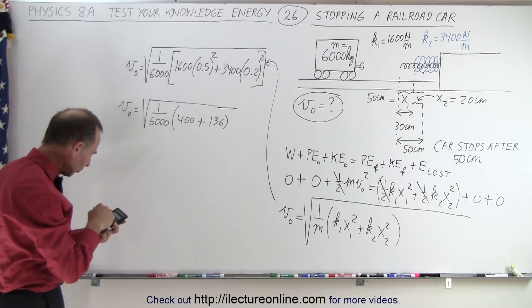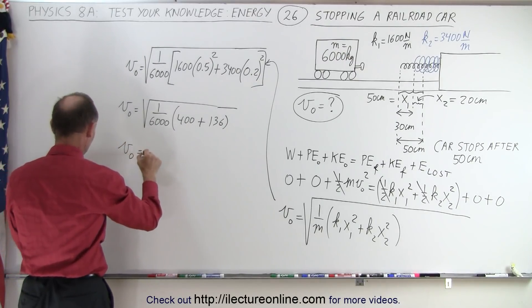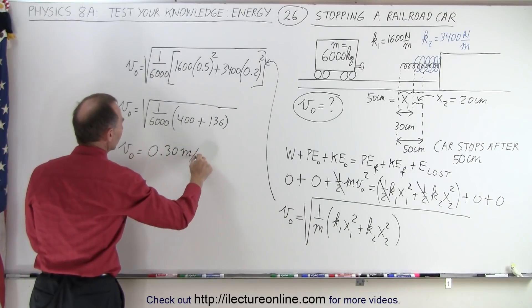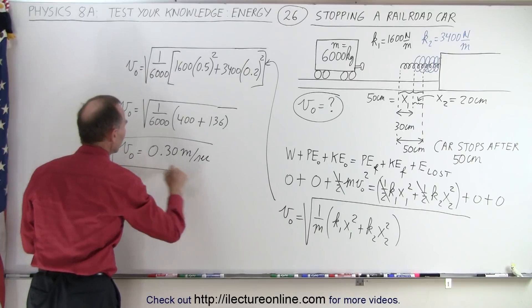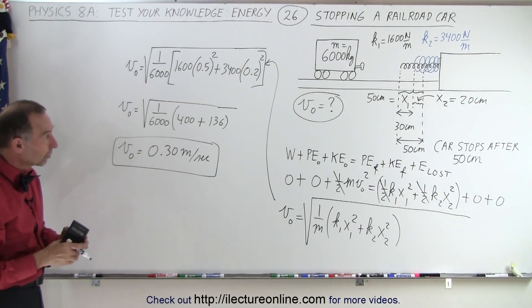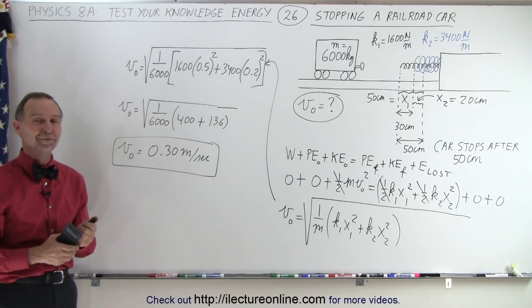Then we divide that by 6000, and now we take the square root of that. And it says that v initial is equal to 0.30 meters per second, a little less than one third of a meter per second. And therefore, those springs are able to handle that car and bring it to a complete stop after 50 centimeters, and that's how it's done.